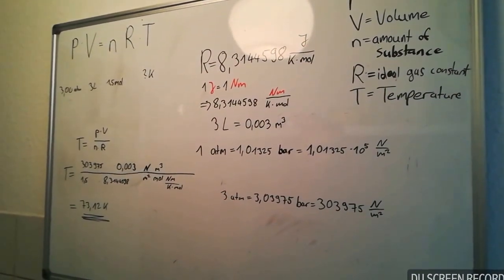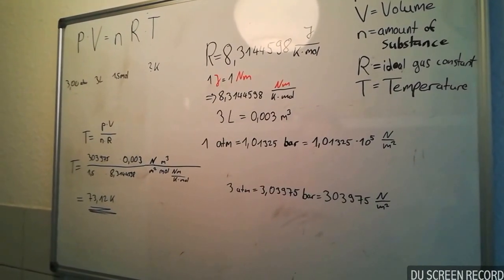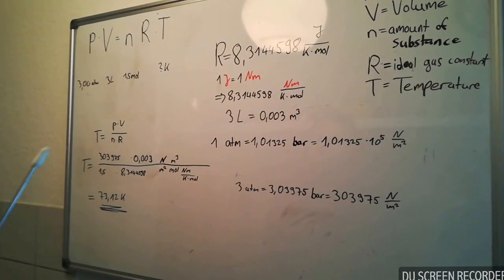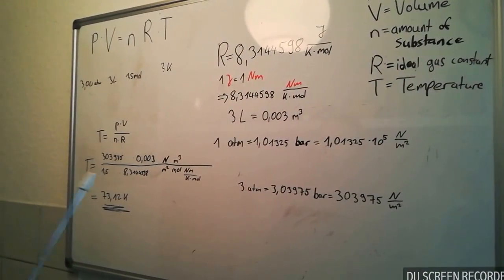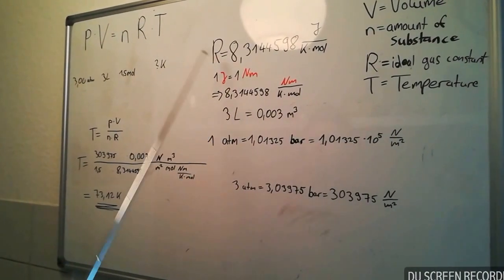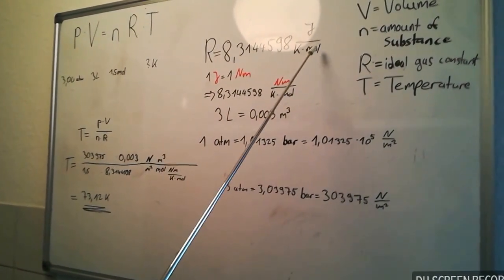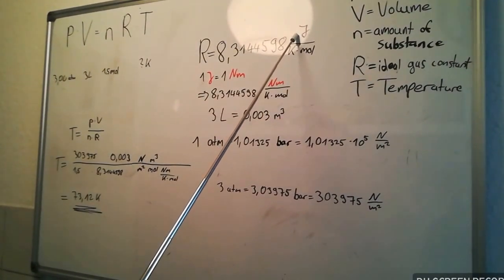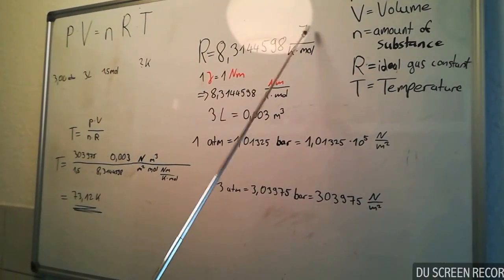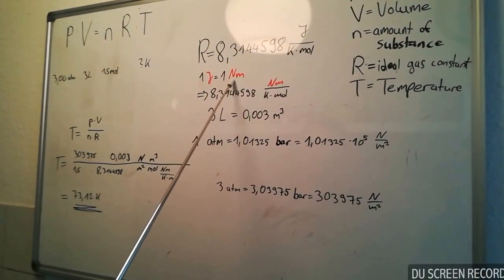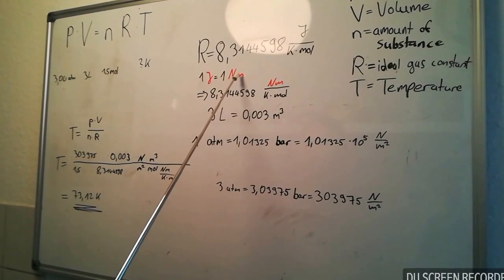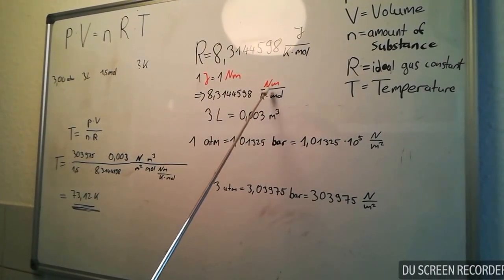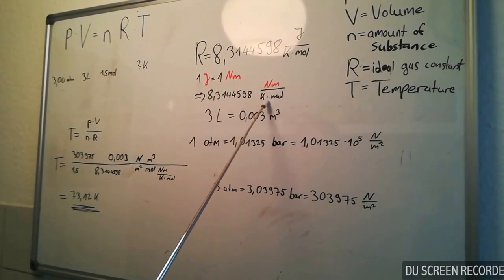First, you have to put the units in the correct dimensions. For the ideal gas constant, you have to convert the unit from joule to newton meter. So, the unit for the ideal gas constant is newton meter divided by kelvin mole.